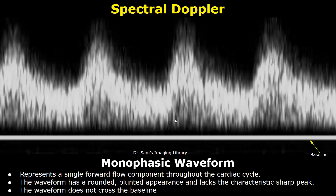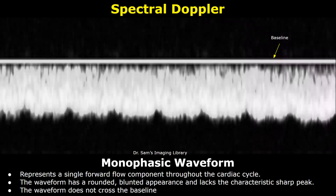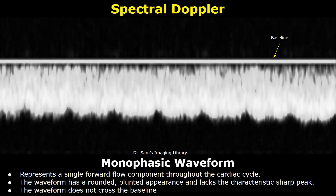Here is another example of a monophasic waveform. We only see one component, that is of forward flow, and the waveform does not really cross the baseline. There is zero diastolic flow — only one component is seen, that is of forward flow. The waveform is seen at only one side of the baseline, and no sharp peaks are seen within the waveform.